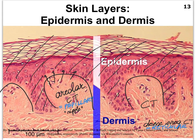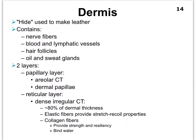The dense irregular connective tissue is called reticular because it looks very web-like, network-like, or mesh-like — a meshwork of all kinds of fibers, including collagen, elastic, and reticular fibers. The dermis is what holds most of the accessory structures, including hair follicles, oil and sweat glands, blood vessels, lymphatic vessels, and nerve fibers.